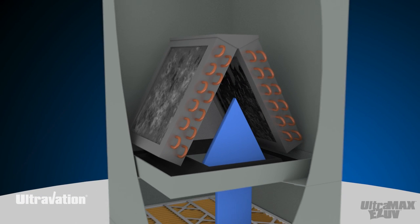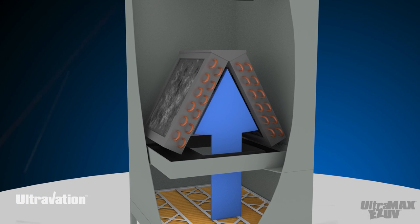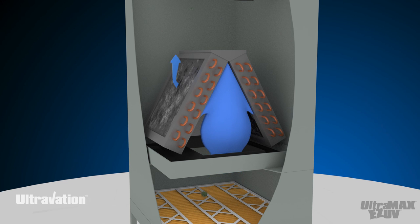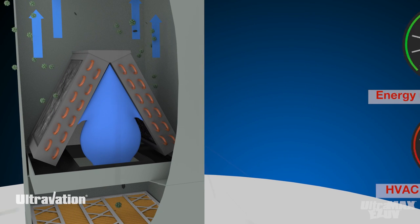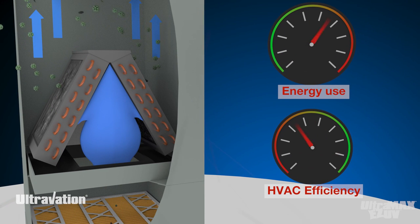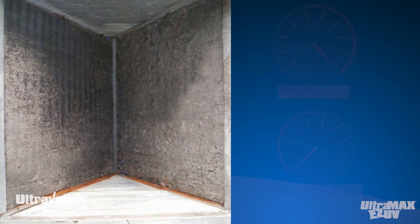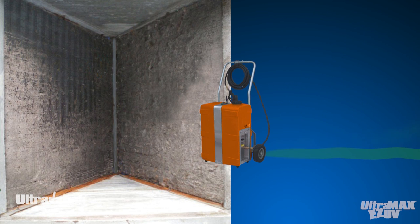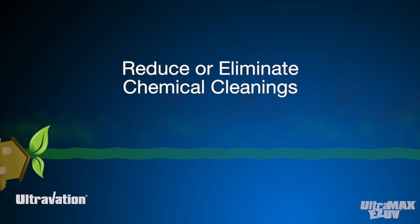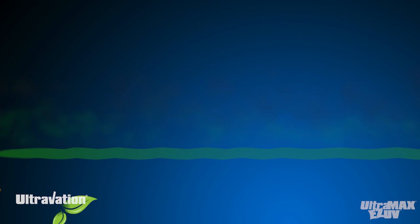A severely bio-clogged coil can cause excessive air resistance, and the insulating characteristics of the bio-growth reduces the thermal efficiency of the system. The result is the air conditioner works harder, increasing energy use and accelerating wear and tear. Clogged coils and drain pans periodically require expensive chemical cleanings, which are not good for the environment.